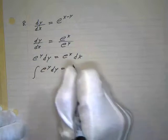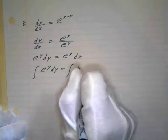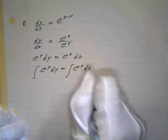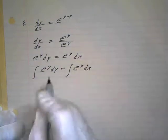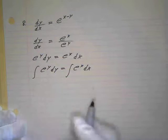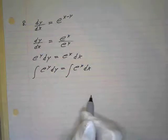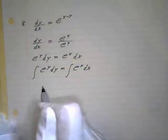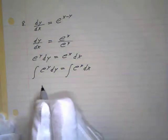We take the integral of both sides: the integral of e to the y dy equals the integral of e to the x dx. It's already set up as e to the u du, so we're ready to go.